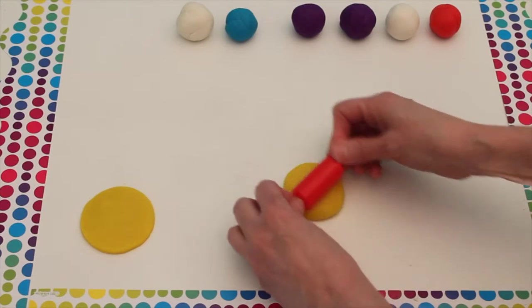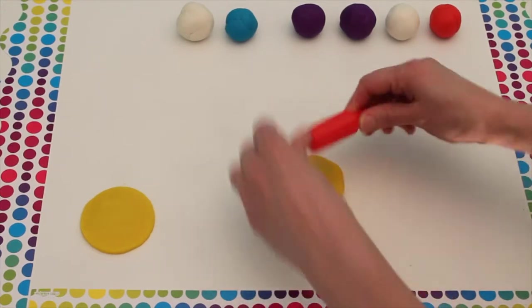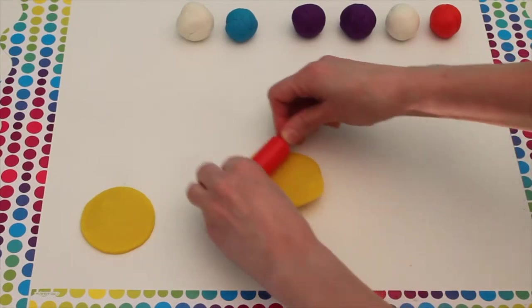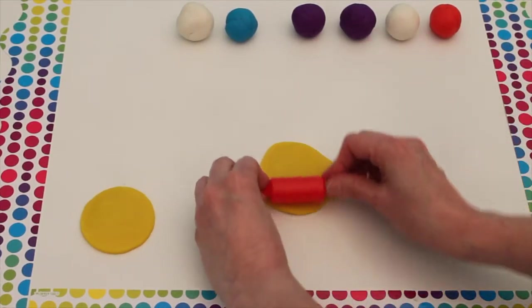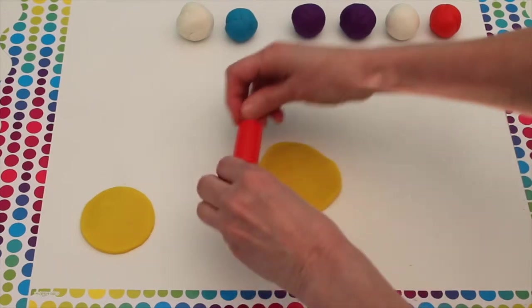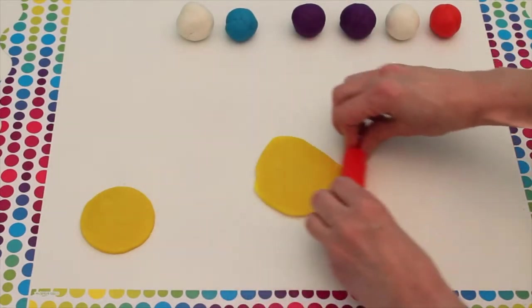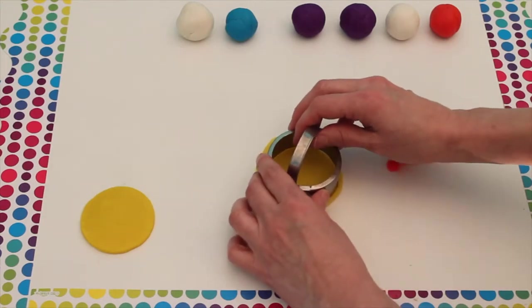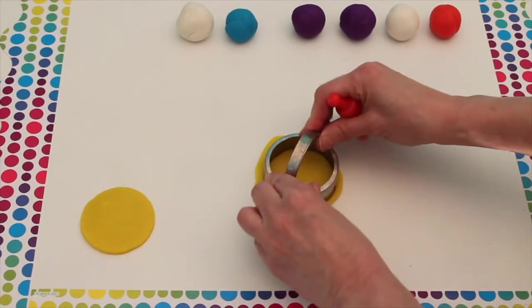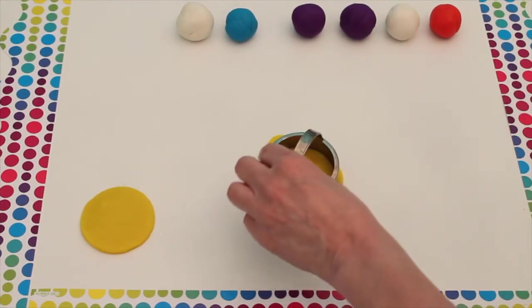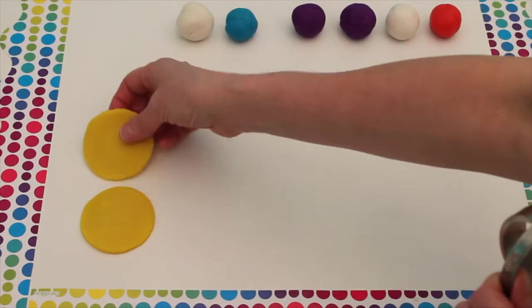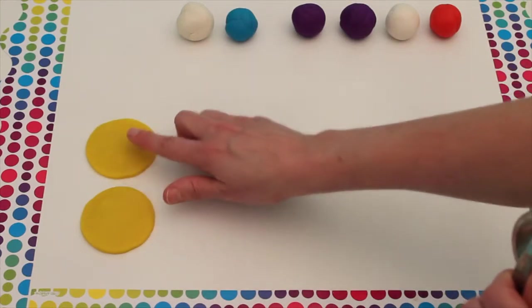Let's make another circle with some more yellow. We have two yellow circles. One, two.